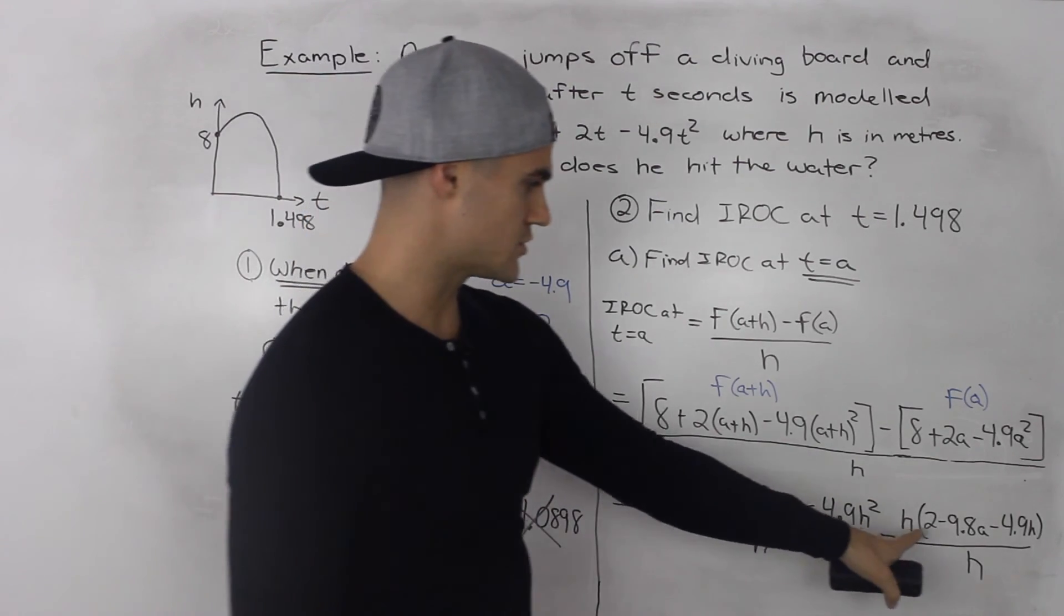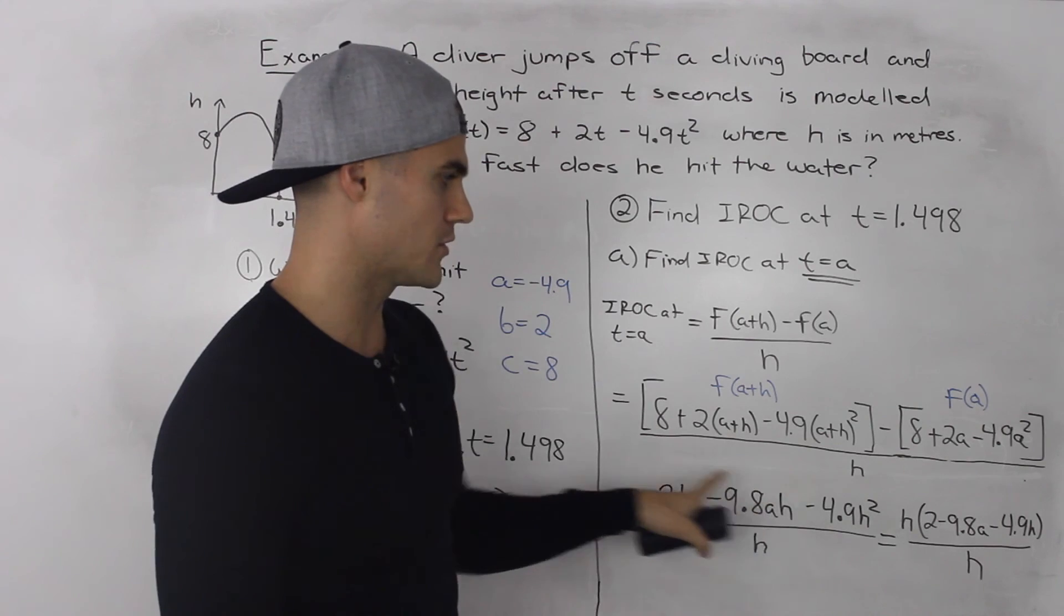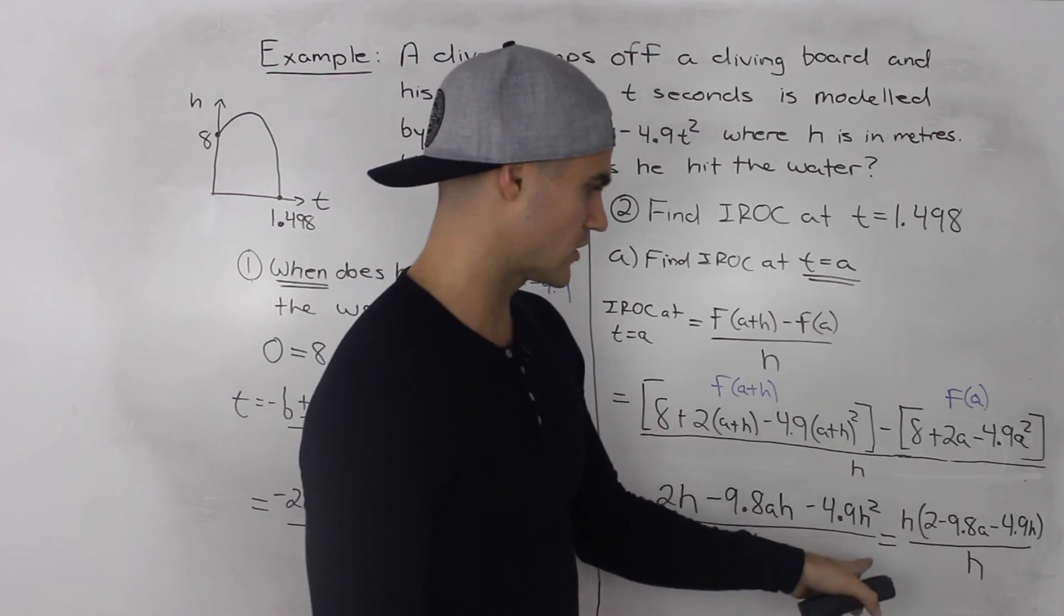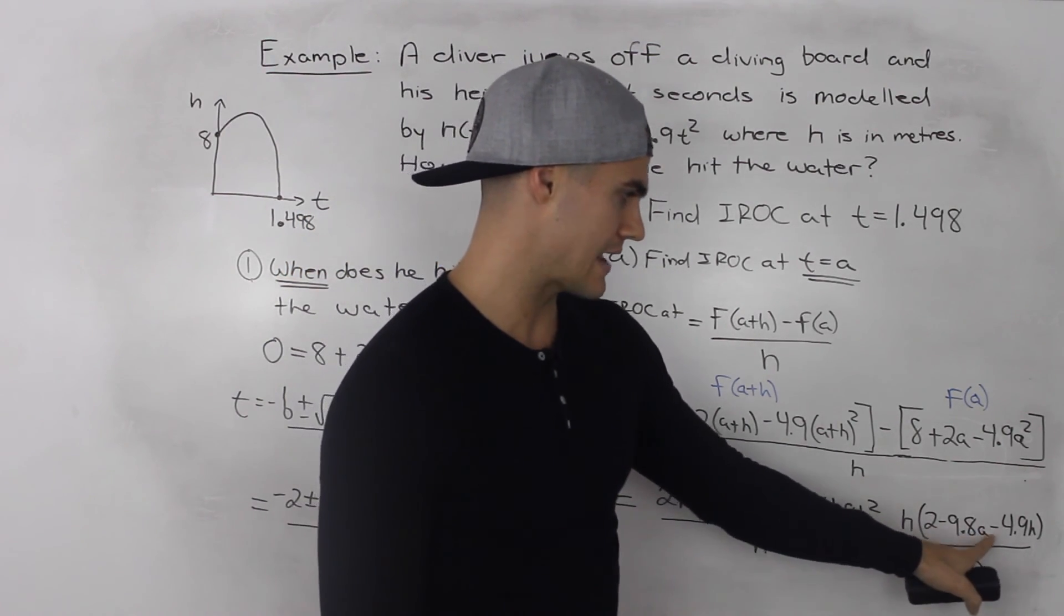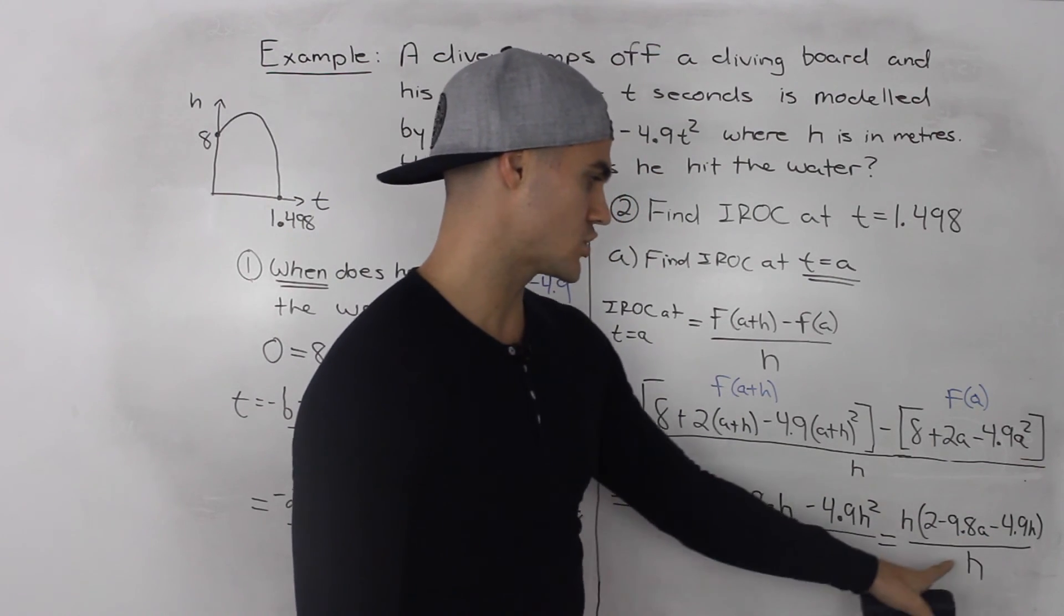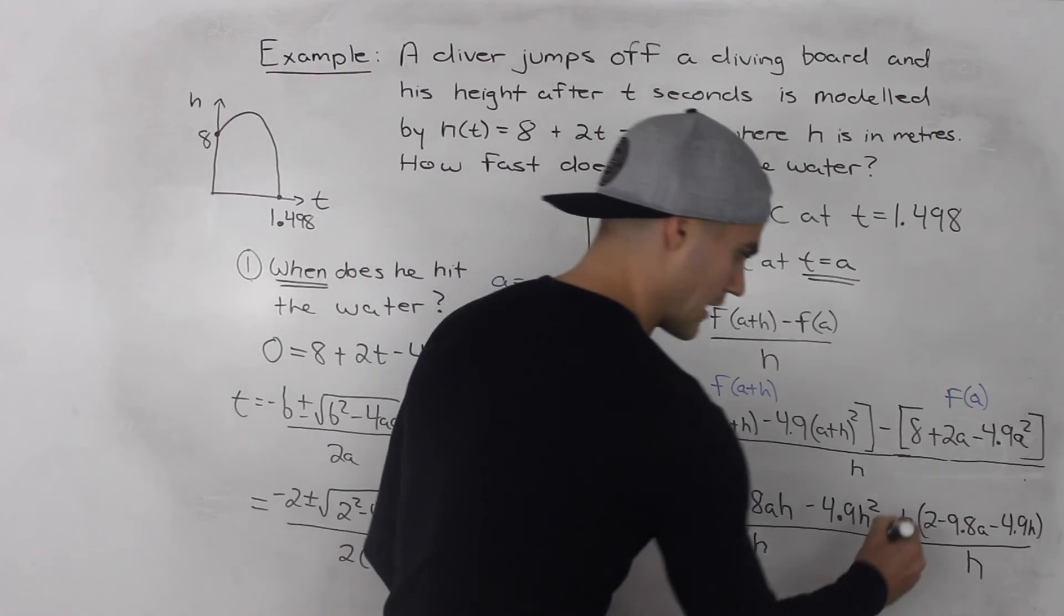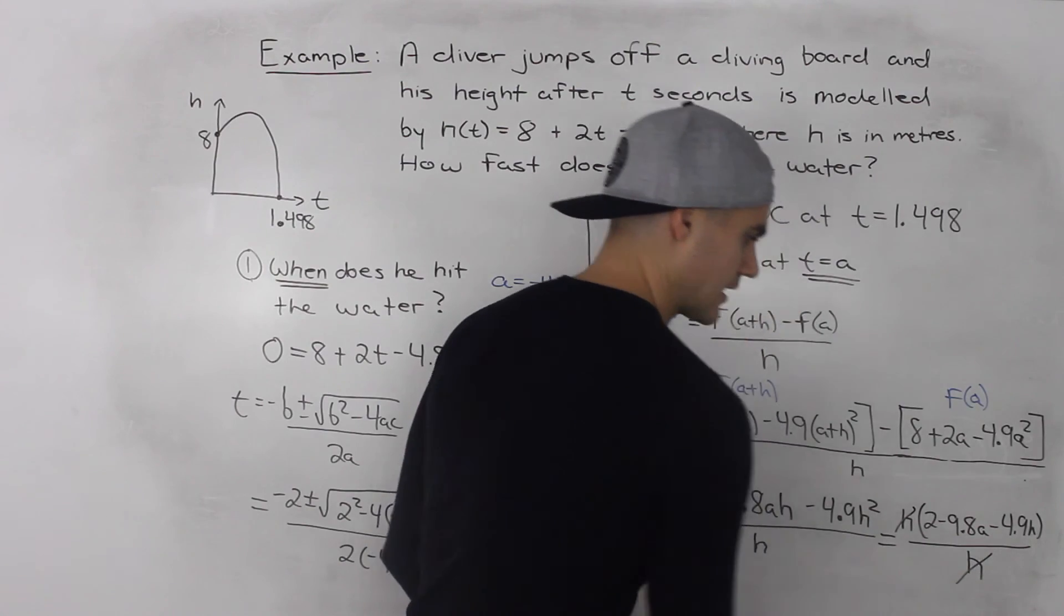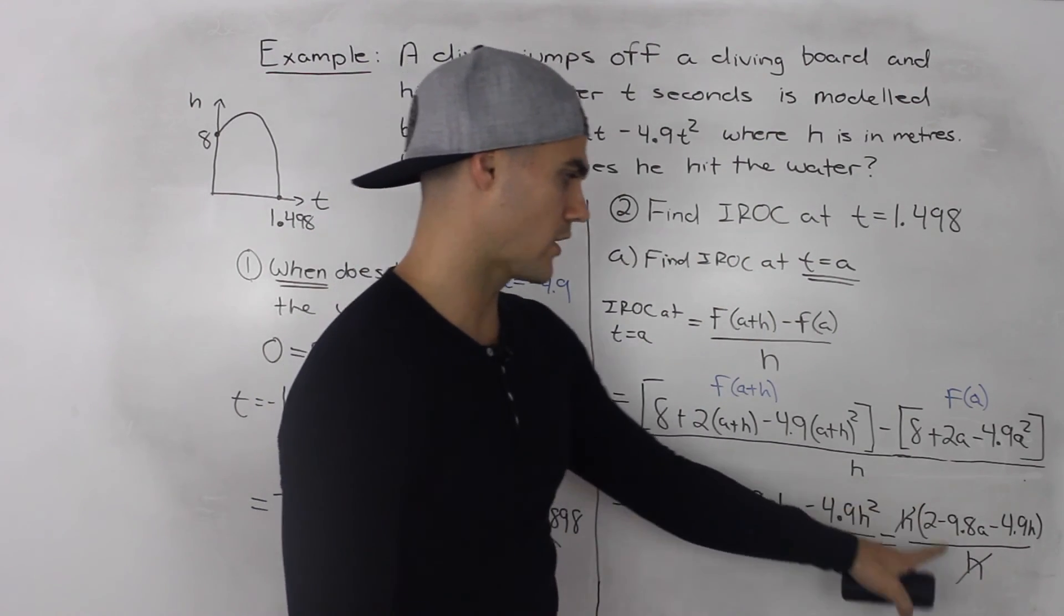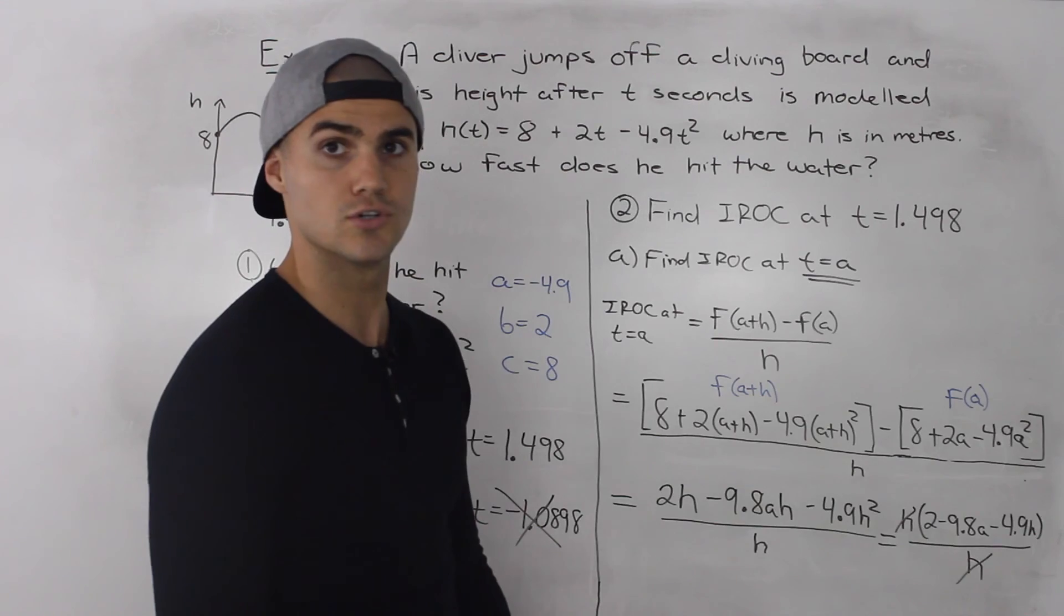Then the next step is you could factor out an h from the numerator. So you factor out the h then you'd be left with 2 - 9.8a - 4.9h all over h. And now these h's can cancel out the one in the numerator and the denominator which is what we were trying to do.